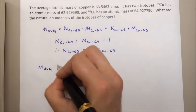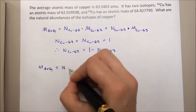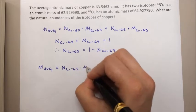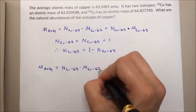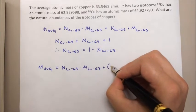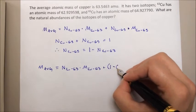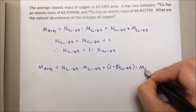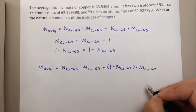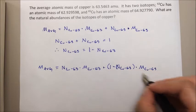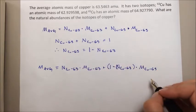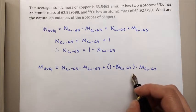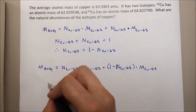So the average molecular mass equals, this first term is unchanged, the natural abundance of copper 63 times the mass of copper 63 plus, now it's one minus the natural abundance of copper 63 times the mass of copper 65. Now if we algebraically expand out this term and then rearrange everything to solve for the natural abundance of copper 63, we will get the following.